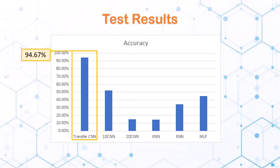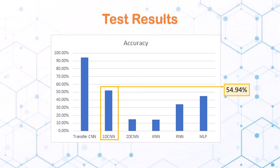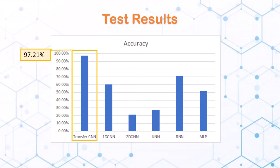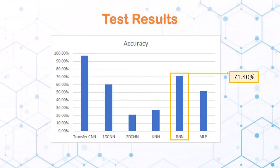Transfer learning CNN is the most accurate model at 94.67%, followed by 1D CNN at 54.94%. For the accuracy scores for the model trained with 12 sets of recordings, transfer learning CNN remains the most accurate model at 97.21%, followed by RNN at 71.40%.